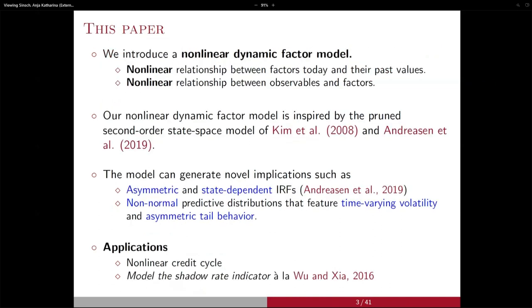In this model, we're going to start at a very abstract way of the relation between the factor and itself in the past, and also between the factor and the data that we observe. This is a very ambitious agenda — it goes along the lines of a non-parametric approach. We are more humble in the sense that we will try to learn from what people have done in the structural macro literature, and in particular we are going to use some results of the solution of dynamic stochastic general equilibrium models, specifically the second-order perturbation approach.